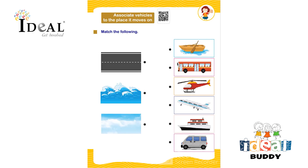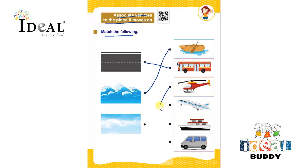Hello everyone. In this worksheet the topic is associate vehicles to the place it moves on. Match the following. So over here the child has to associate the given vehicles on the right side to the place that it moves on — say for example the boat in the water, bus on the road, helicopter in the air, aeroplane in the air, ship in the water, and car on the road. So here the child has to connect the vehicle with their moving places.